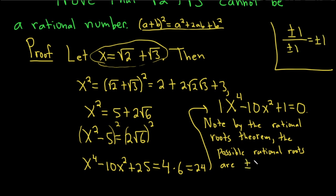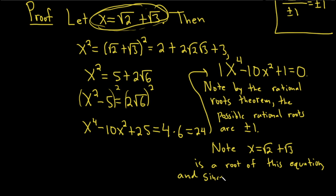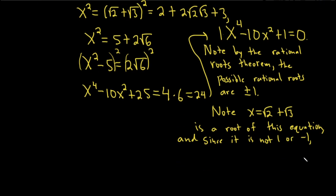So if this equation is to have any rational roots, it would be one of these. And none of these satisfy this equation, by the way. This is a root of this equation. So note, x equals √2 + √3 is a root of this equation. And since it is not among this list, it cannot be rational. Since it is not 1 or negative 1, it is not rational.